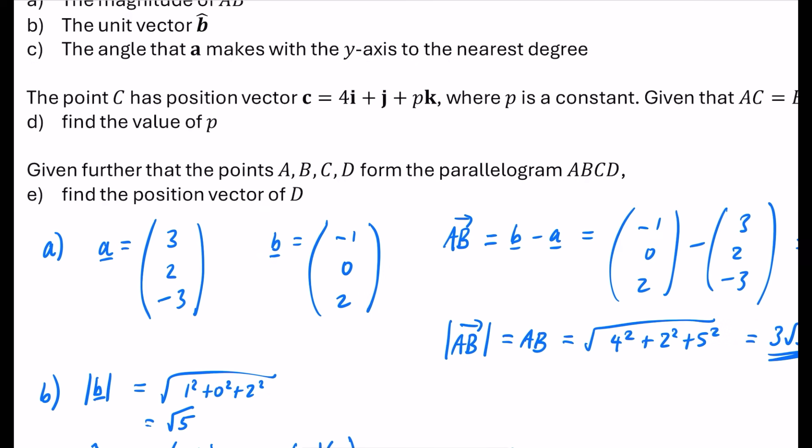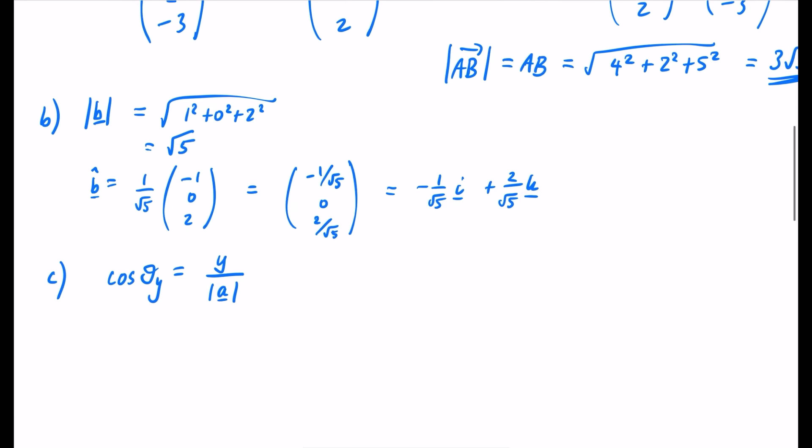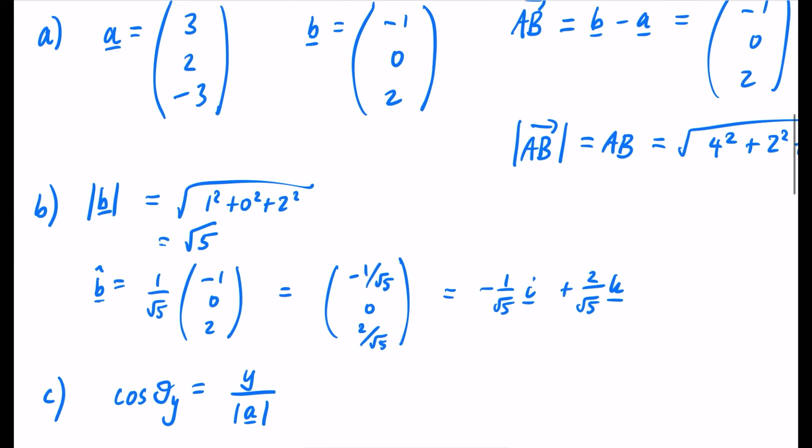And then we're going to do for part C, the angle that A makes with the y-axis to the nearest degree. So for part C of the question, we're going to be finding the angle that it makes with the y-axis, and this is for A. So we know from the formula that cos of theta y is going to be the y-coordinate divided by the magnitude of A. And that's just from this part that we've got over here. And I'm just going to remind us our A vector is this one up here. So I'm probably going to need to work out the magnitude of A. So it's going to be my square root of a 3 squared, a 2 squared, and a 3 squared. So I'll do, what's that? A 9, a 4 and a 9. That's the square root of 22.